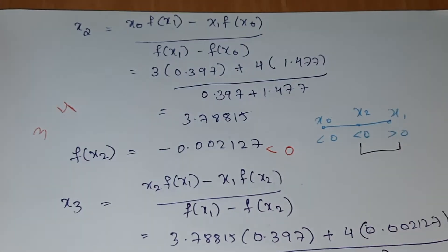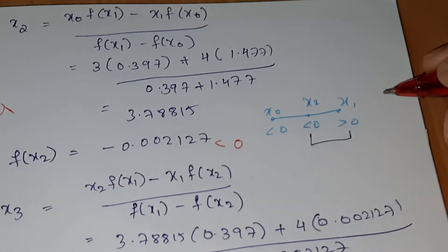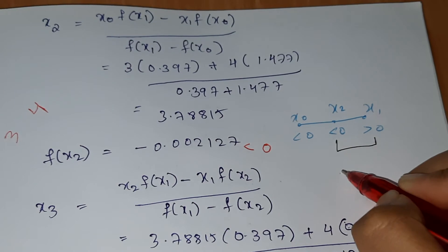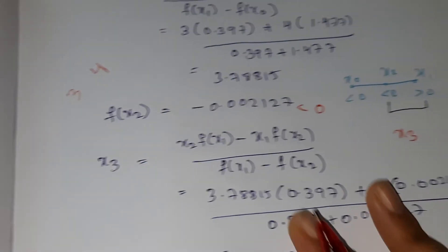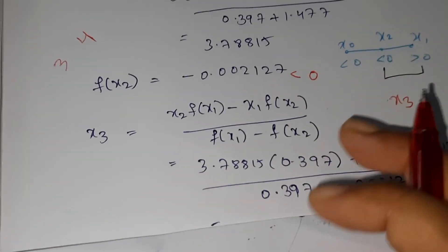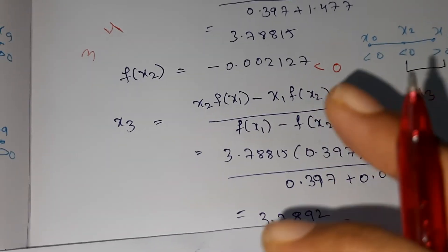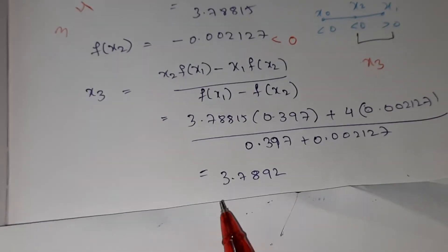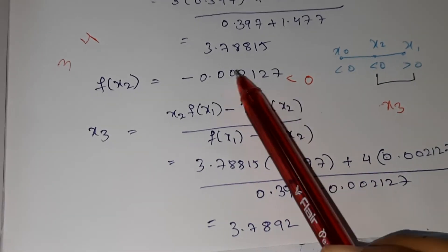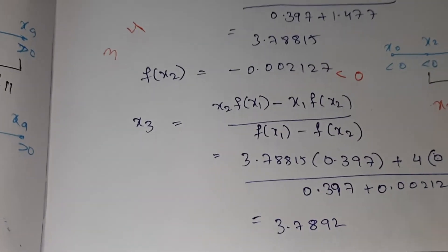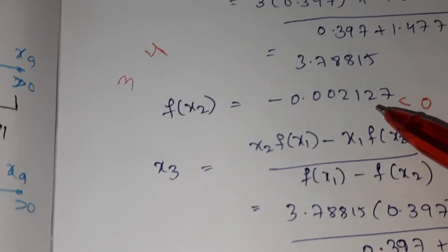f(x2) is less than 0, so we take x1 which is greater than 0. The root x3 lies between x2 and x1. So x3 = [x2·f(x1) − x1·f(x2)] / [f(x1) − f(x2)]. Substituting the values, we get x3 ≈ 3.7892. Up to two decimal places, we get 3.78 consistently.